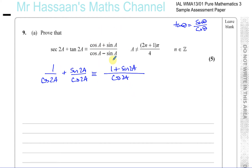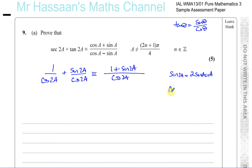We're getting closer to the required form. You'll notice these are single angles on the right-hand side, but here we have double angles. So if we use our double angle formulae — sin2A equals 2sinA cosA, and cos2A equals cos²A minus sin²A. Note these are not given to you, but you can derive them from the formula sheet provided.